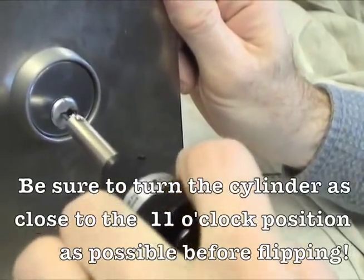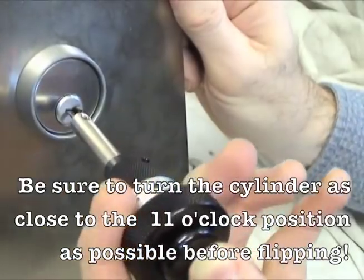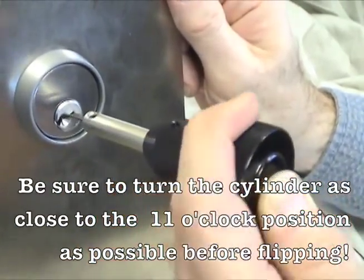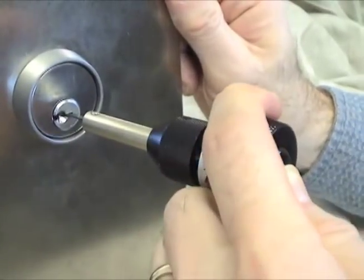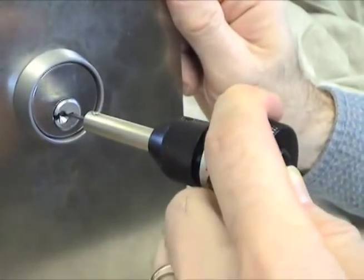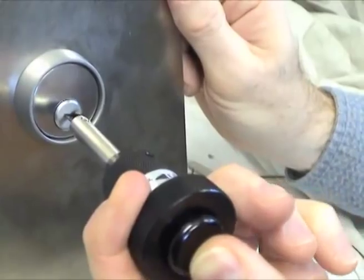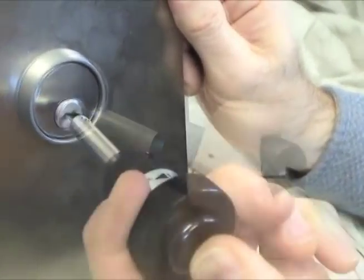Insert the tip of the FLIP-IT into the keyway, holding it steady and push the black button with your thumb. The plug quickly flips around past the top pins, now in the direction for the lock to open, saving your valuable time and aggravation.